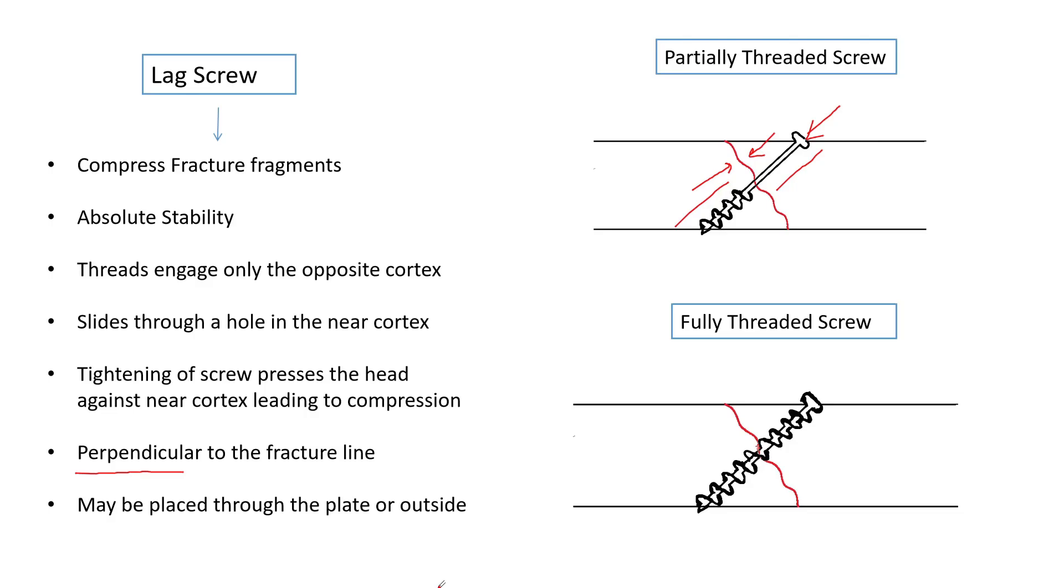Both partially and fully threaded screws can be used as a lag screw. When using a fully threaded screw as a lag screw, we have to ensure that the proximal threads do not engage the near cortex, for which we have to do over-drilling of the near cortex.